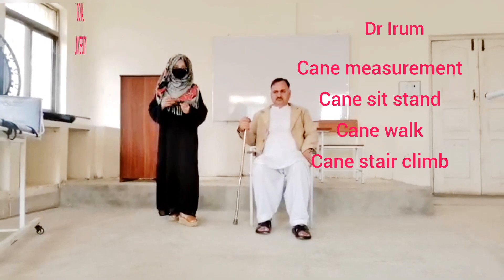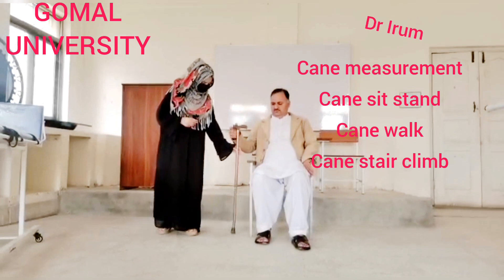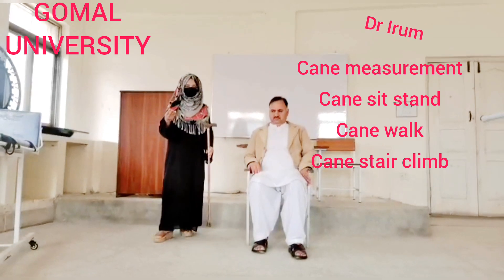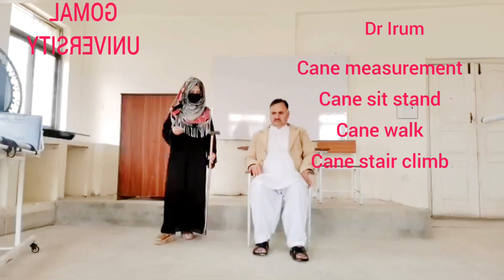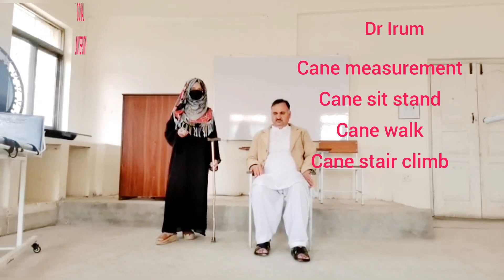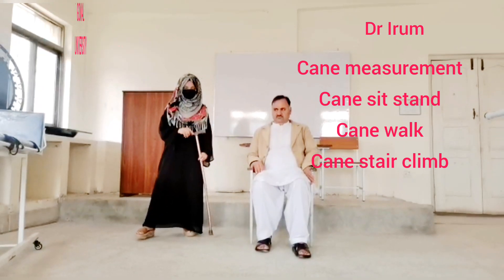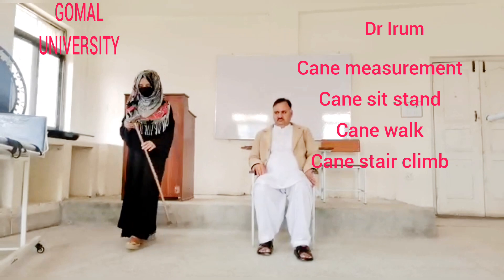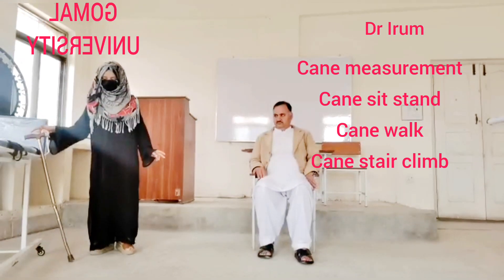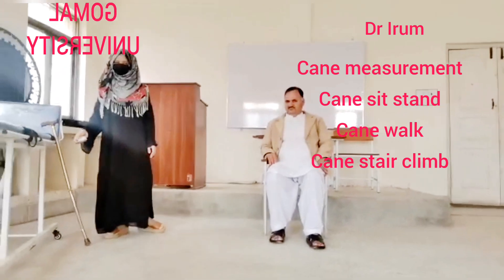First of all, we ask the patient to stand in a straight position, from which we take the cane measurement. Cane measurement is taken from the greater trochanter to the floor. For a cross-check, we take another measurement: the patient stands straight with the elbow flexed to 15 degrees, and we measure from the wrist level to the floor. If both measurements are the same, it means we have taken the measurement correctly.